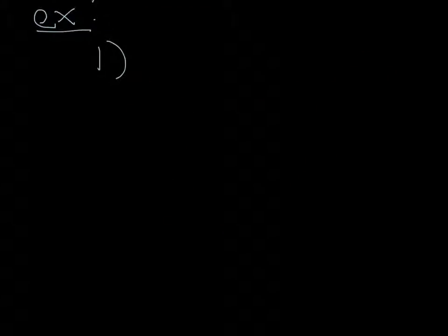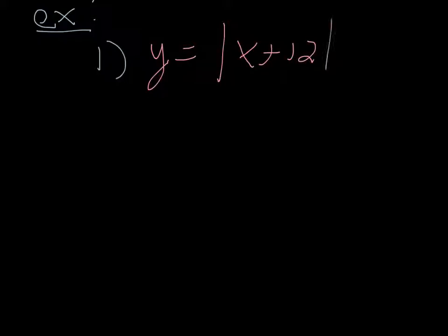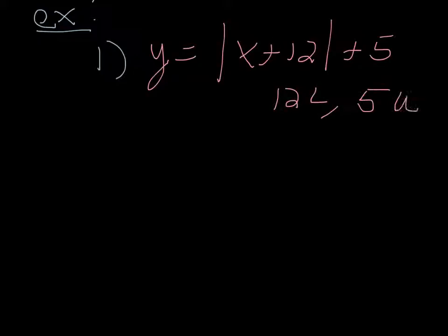Let's do a few examples. Example 1: y equals the absolute value of (x+12) plus 5. A lot of people might try to add the numbers together, but the 12 is enclosed within the absolute value signs — they act as parentheses. So this is a shift of 12 units to the left and 5 units up. The plus 5 is the vertical shift, and the plus 12 inside gives the leftward horizontal shift.